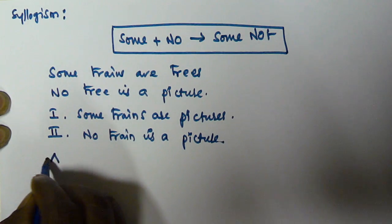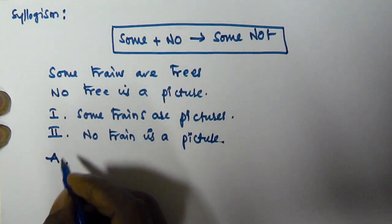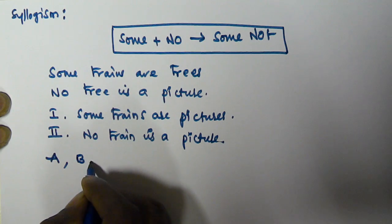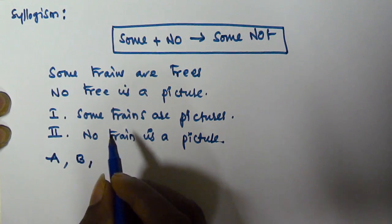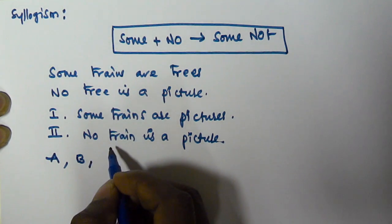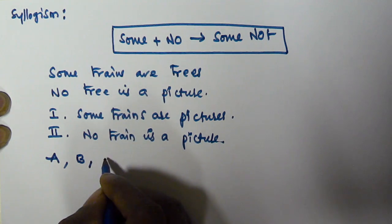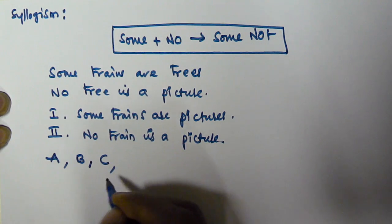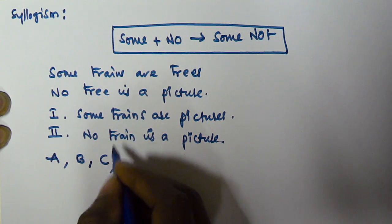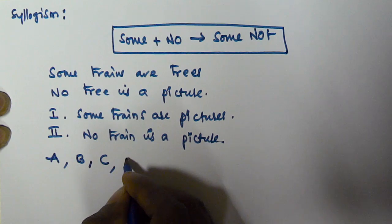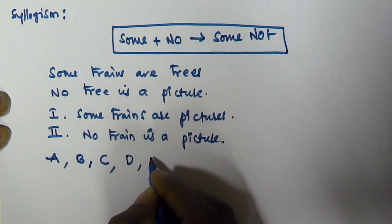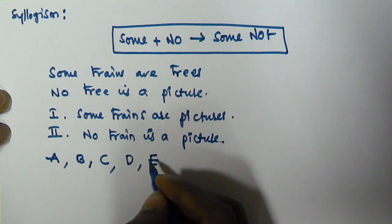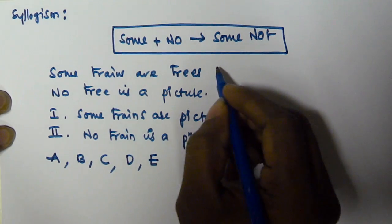If conclusion one is alone true, we have to select option A. If two is alone true, then we have to select option B. If either one or two is true, then we select C. If both are false, we select D. If both are true, we select E.